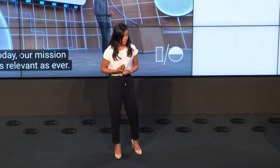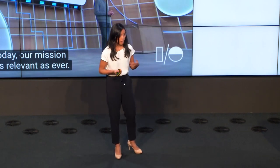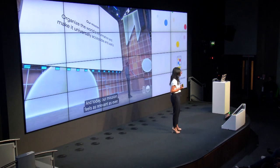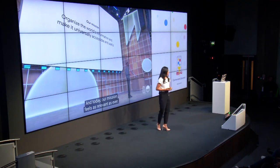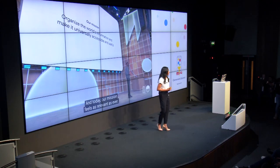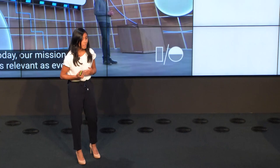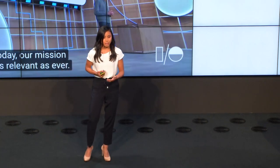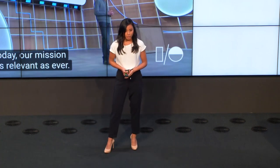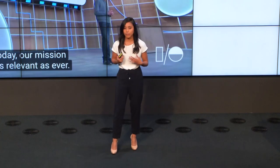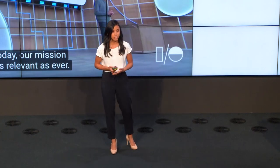Think about how you can design a product that is accessible and delightful to as many people as possible based on what you know about different human conditions. As Sundar announced at I/O '19, and actually for the past 21 years of Google, our mission statement is to make the world's information universally accessible and useful.